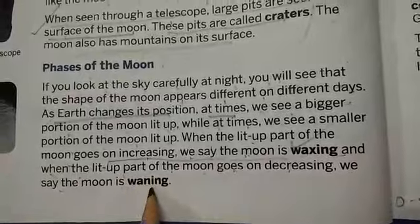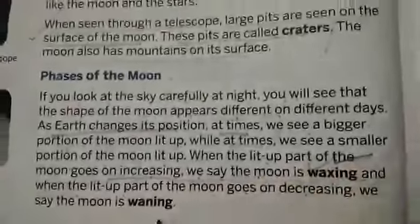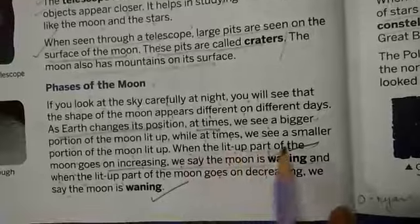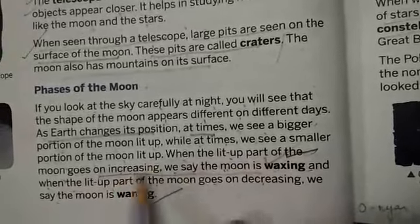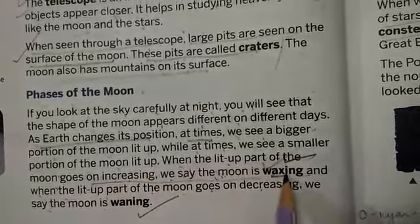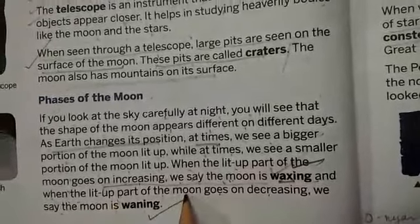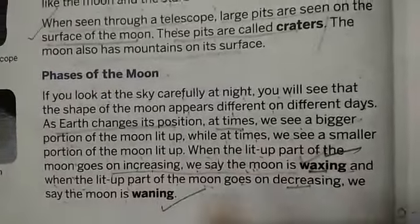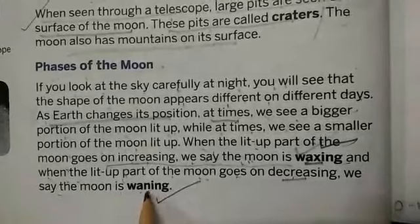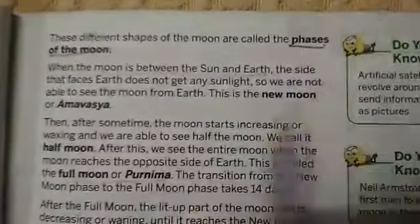And when the lit-up part of the moon goes on decreasing, we say the moon is waning. These different shapes of the moon are called phases of the moon.